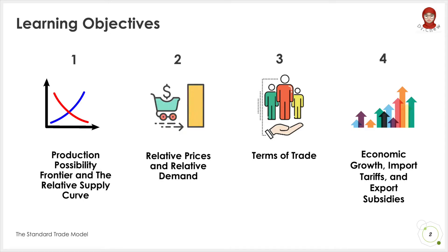There are 4 learning objectives in this lesson. By the end of this lesson, you should be able to: 1. Discuss the relationship between the production possibility frontier and the relative supply curve. 2. Discuss the relationship between relative prices and relative demand. 3. Explain the effect of the terms of trade on the nation's welfare. 4. Outline the effects of economic growth, import tariff and export subsidies on trade.